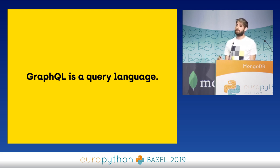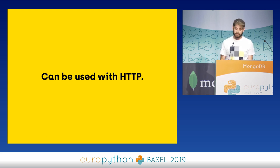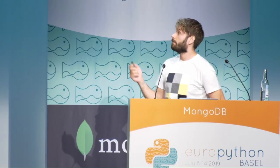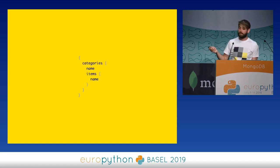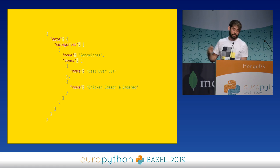GraphQL has been used in production by Twitter, GitHub, Reddit, and loads of other sites. It can be used with HTTP — though it doesn't have to — you can also use it with WebSockets or any other protocol. In the case of HTTP, there is only one endpoint, and you send a document to request the data you want. You do an HTTP POST to slash GraphQL, send the query, and you get back exactly the data you asked for. If you want more information, just change the shape of your document.